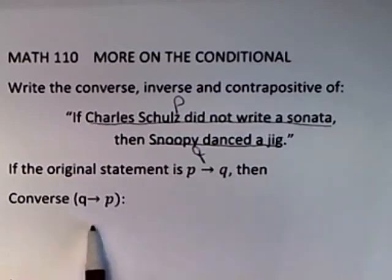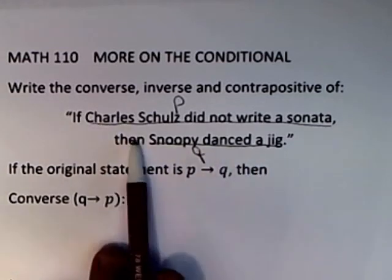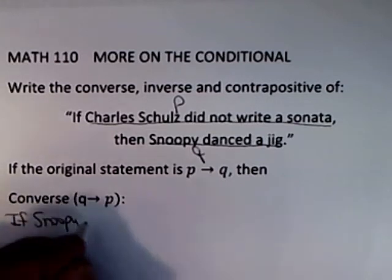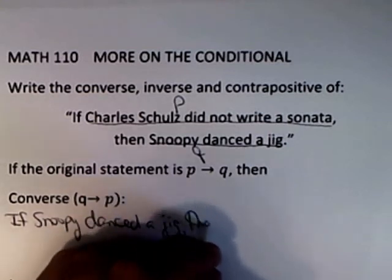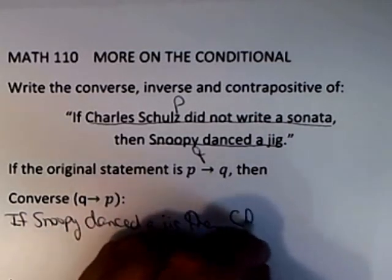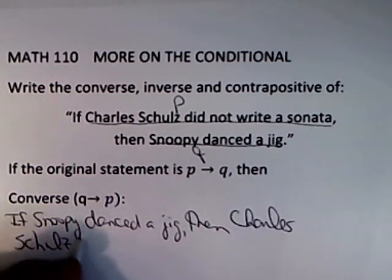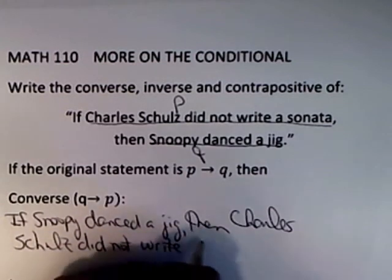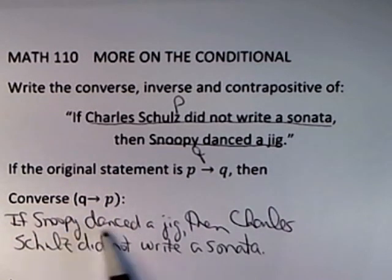then the converse, Q implies P, would be: if Snoopy danced a jig, then Charles Schulz did not write a sonata. Notice the converse is just switching the P and the Q in their roles.